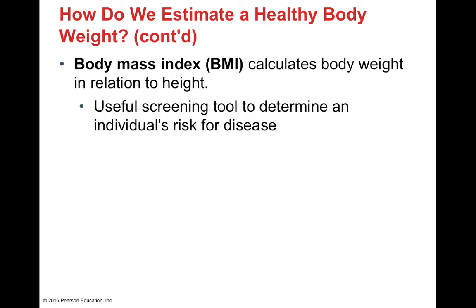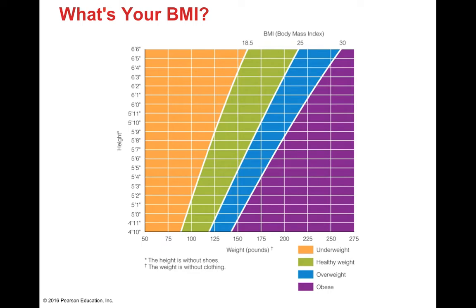The body mass index, or BMI, helps calculate body weight in relation to an individual's height and is a useful tool to screen for disease risk based on body weight. Using a BMI table — looking at height without shoes and weight without clothing — you find your height and corresponding weight. For example, at 5'4", the good range might start at 115 pounds; around 145 would enter the overweight range, 145-175 is overweight, and from 175 on would be obese. As you get taller, a little more weight is allowed before being considered overweight.